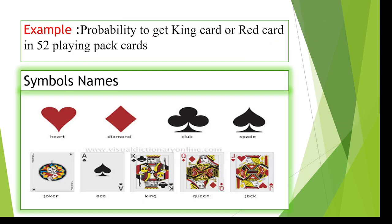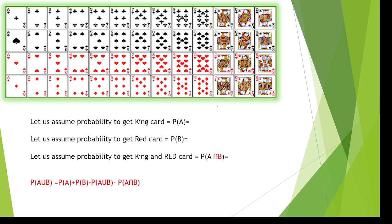Coming to the examples: find the probability to get a king card or a red card in a 52-card playing pack. Let A be the event of getting a king and B be the event of getting a red card. We are asked to find probability of A union B. We know that hearts have 13 cards, diamonds have 13, clubs have 13, and spades have 13, totaling 52 cards.